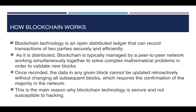Blockchain technology is a peer-to-peer distributed ledger that can record all transactions of two parties securely and efficiently. Since it is distributed, these transactions are stored inside blocks and blocks are linked to form a chain. The creation of a block is done through a process called consensus, which must be achieved in a peer-to-peer network by each peer working simultaneously to solve a complex mathematical problem to validate the next block. Once a block is added to the blockchain, you cannot change it — even if you try, it is easy to verify that it is malicious data. This is why blockchain is secure.